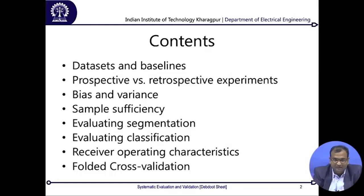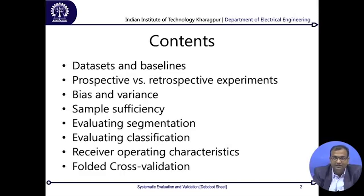From there we enter into a standard way of evaluating algorithm performances in any learning-based task - called receiver operating characteristics. Once we have all of this ready, knowing what datasets are, what your baselines are, and where your methods stand with respect to others, the major thing that comes next is cross-validation. We will learn about folded cross-validation - keeping part of your data blinded and not used during training, then doing it repetitively over a cycle so you know the best case, worst case, and average performance of your algorithm at field-level deployment.